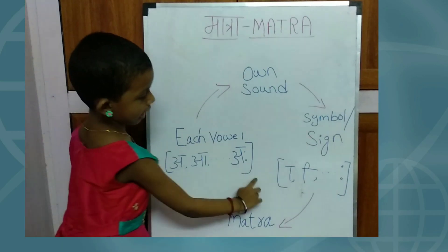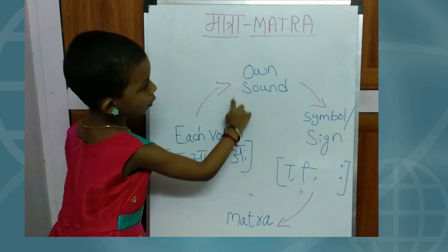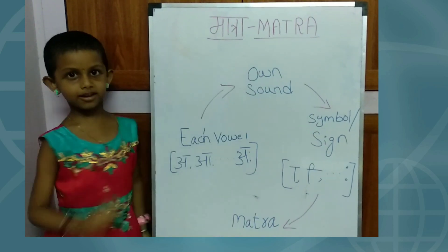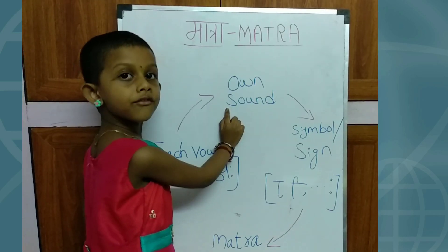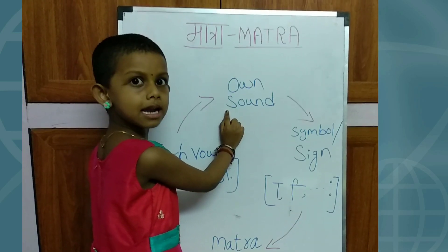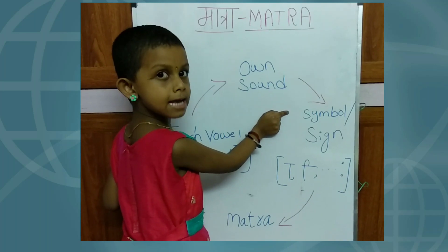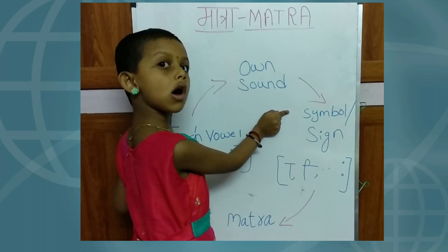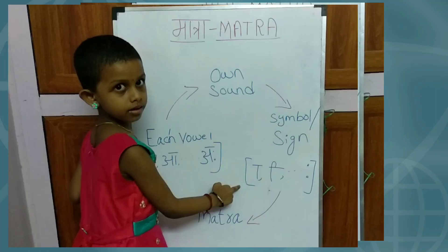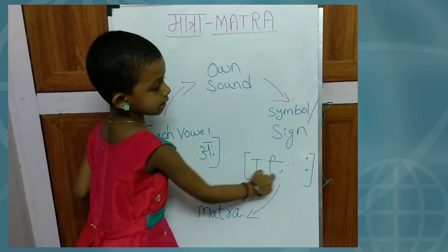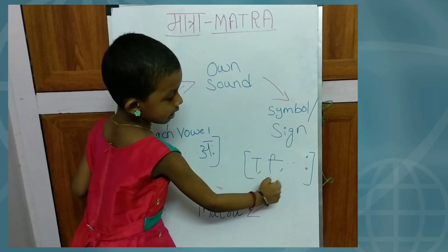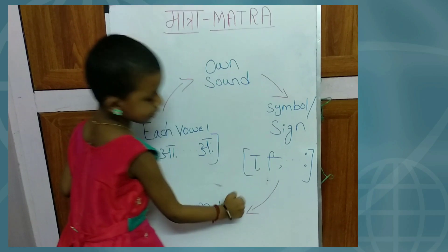Each vowel has its own sound. We represent the sound as a symbol or sign. We call this symbol a matra.